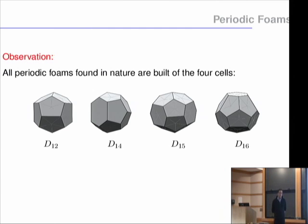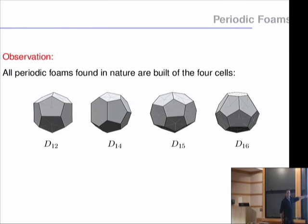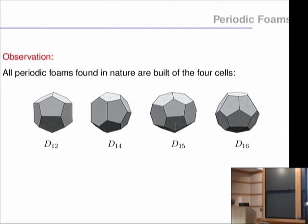Now comes a surprising observation that chemists and material scientists found by experiment: all periodic foams found in nature are built of only four cell types. The first is the dodecahedron. The second is almost a dodecahedron but with two hexagons — one in the front and one in the back. The third has three hexagons on the equator. The fourth has four hexagons in a tetrahedral position. All the other faces are pentagons.